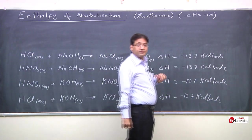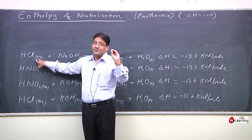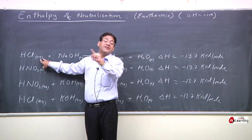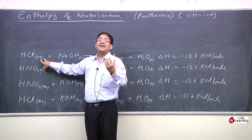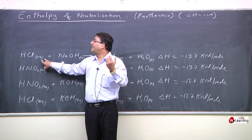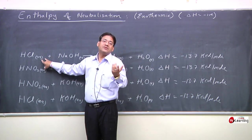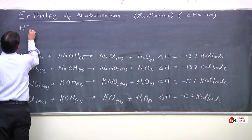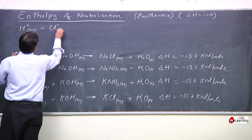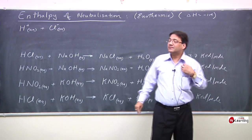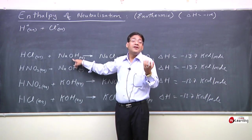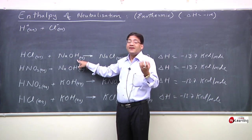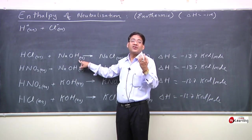HCl is a strong acid because in aqueous solution it is 100% dissociated, and dissociation requires no energy — no enthalpy, no heat is absorbed. Similarly, NaOH is called a strong base because it is almost 100% dissociated in its aqueous solution.